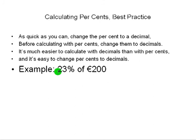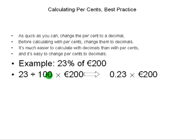The first example is 23% of 200 euros. As quick as you can, you change the 23% into a decimal. You do that by dividing 23 by 100 and it becomes 0.23. Dividing by 100 is very easy - you just move the decimal point two places to the left. It's understood to be behind a number if there's no decimal point in it, and then you move it two places and it comes in front of the two. That's as quick as you can change it to a decimal.